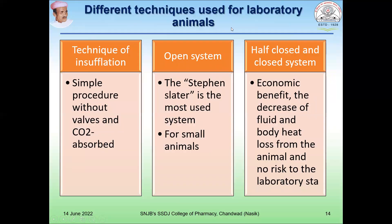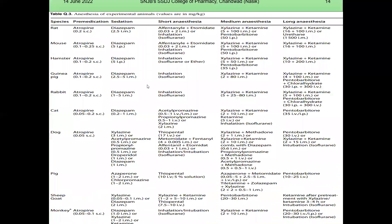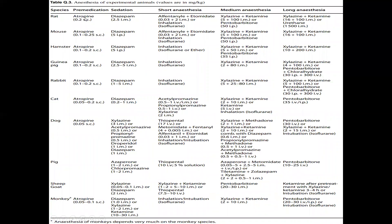Different techniques are used for administration of inhalation anesthesia in the laboratory. The insufflation technique is a simple procedure without a valve and CO2 absorber. The open system, or Stephens-Slater system, is the most used and widely applied for small animals. The half-closed and closed systems offer economic benefits, decreased fluid and body heat losses from the animals, and no risk to laboratory staff.